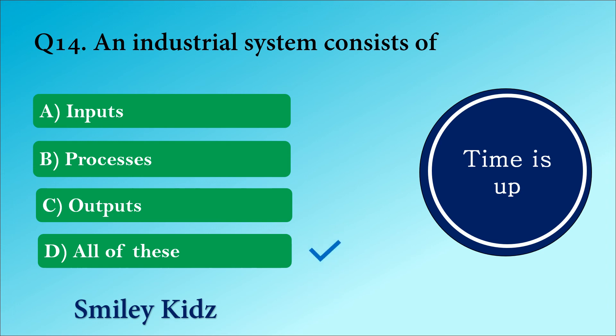The right answer is option D. All of these. An industrial system consists of inputs, processes and outputs.